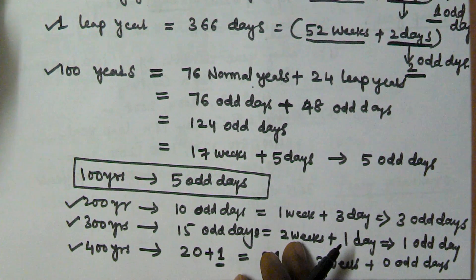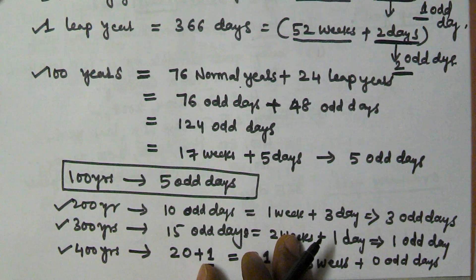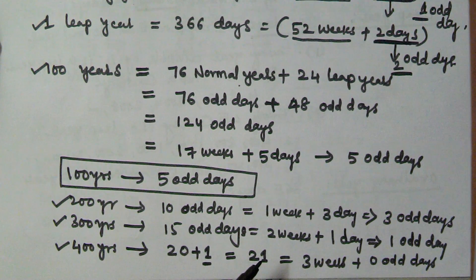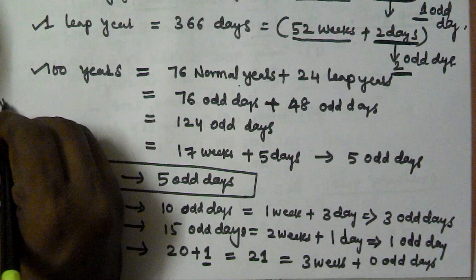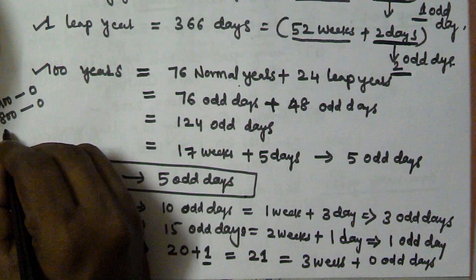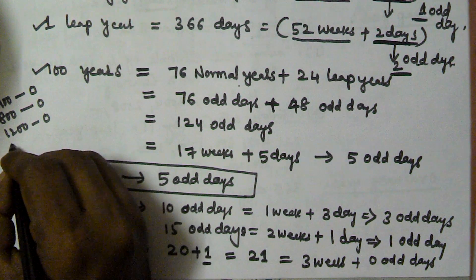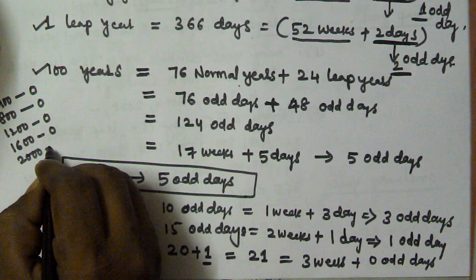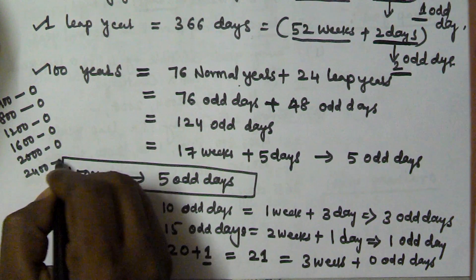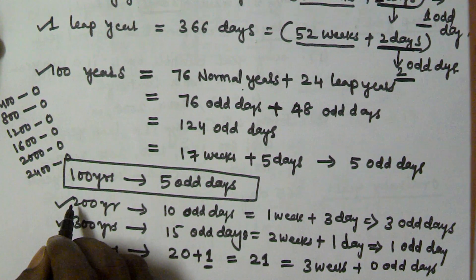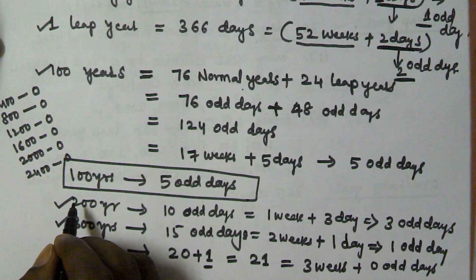In the same manner, all multiples of 400 years — like 800, 1200, 1600 — are going to contain 0 odd days. So the multiple of all 400 years contains 0 odd days. I hope you understand all these concepts.